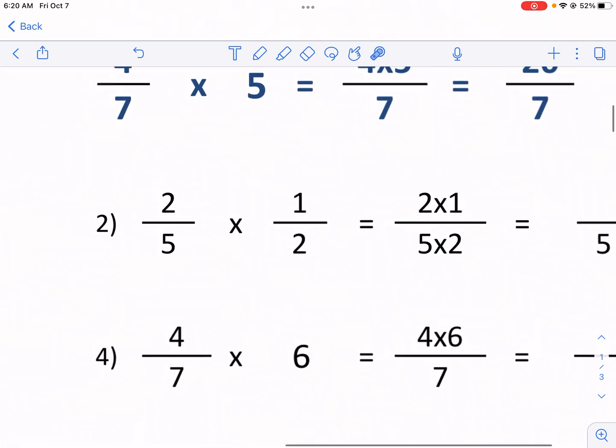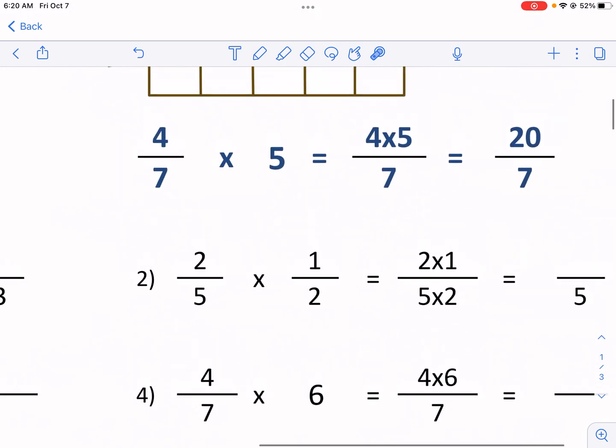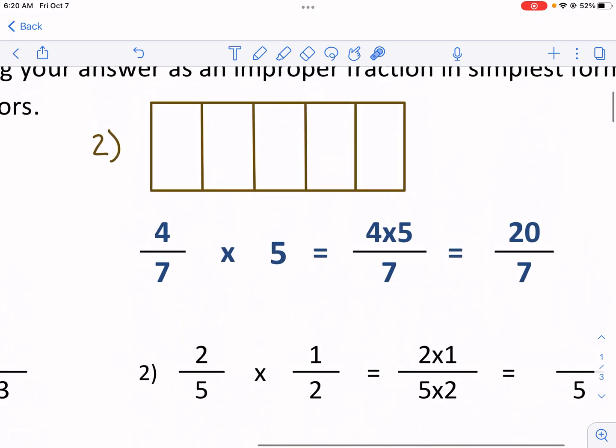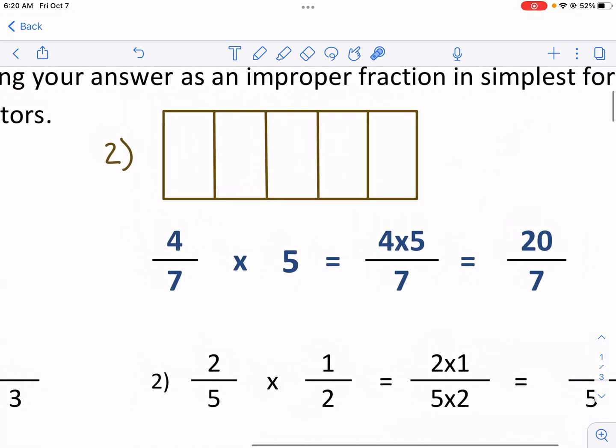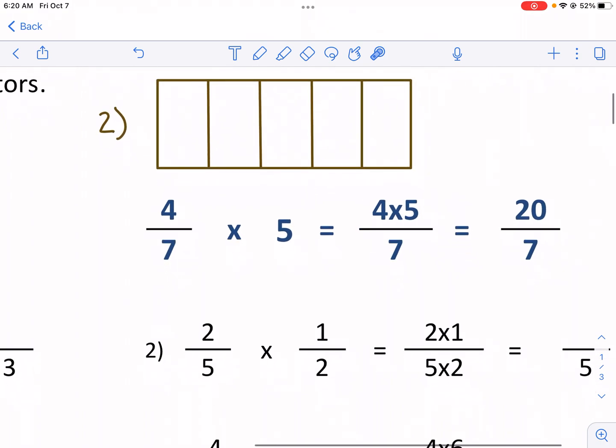Number two is the problem two fifths times one half. I like to see a visual representation of this concept. To do that, I have this chocolate bar. It's chocolate, it's got five parts to it. That's why this five is on the bottom. Say one, two, three, four, five, five parts of the whole.